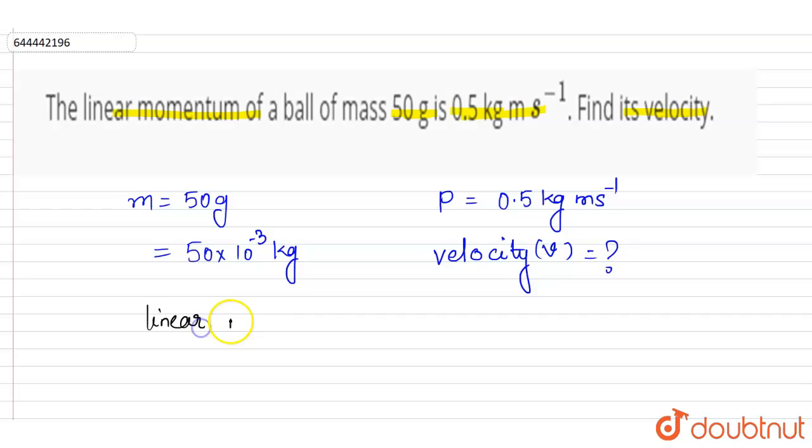We know that linear momentum is the product of mass and velocity. Linear momentum is equal to mass into velocity. That means linear momentum is denoted by the symbol p is equal to mass m into velocity v. So p is equal to m v.